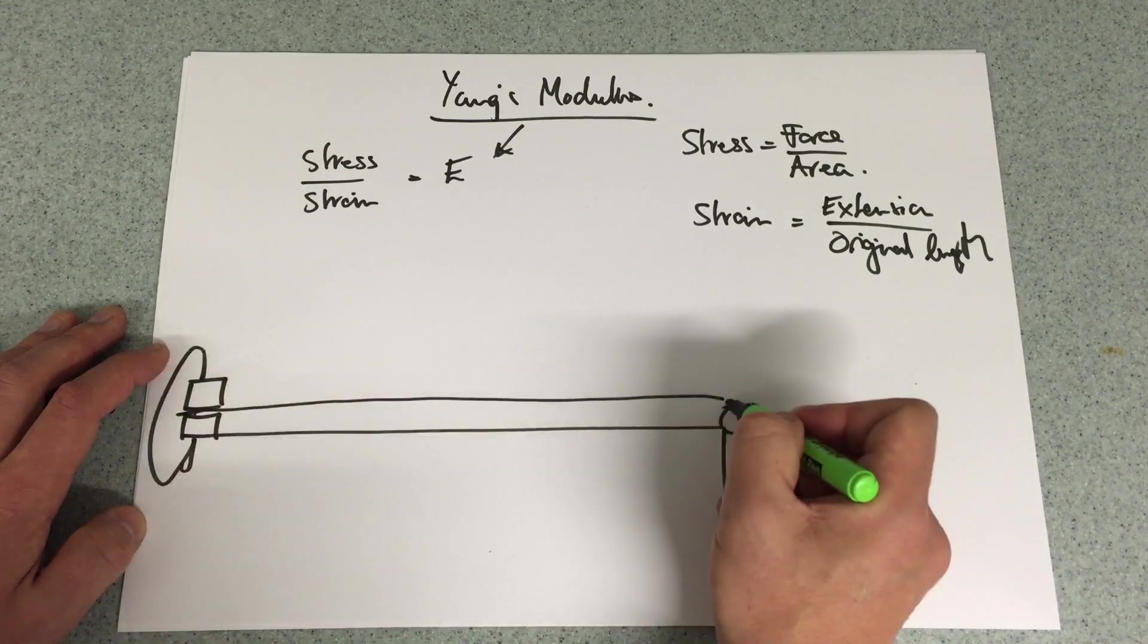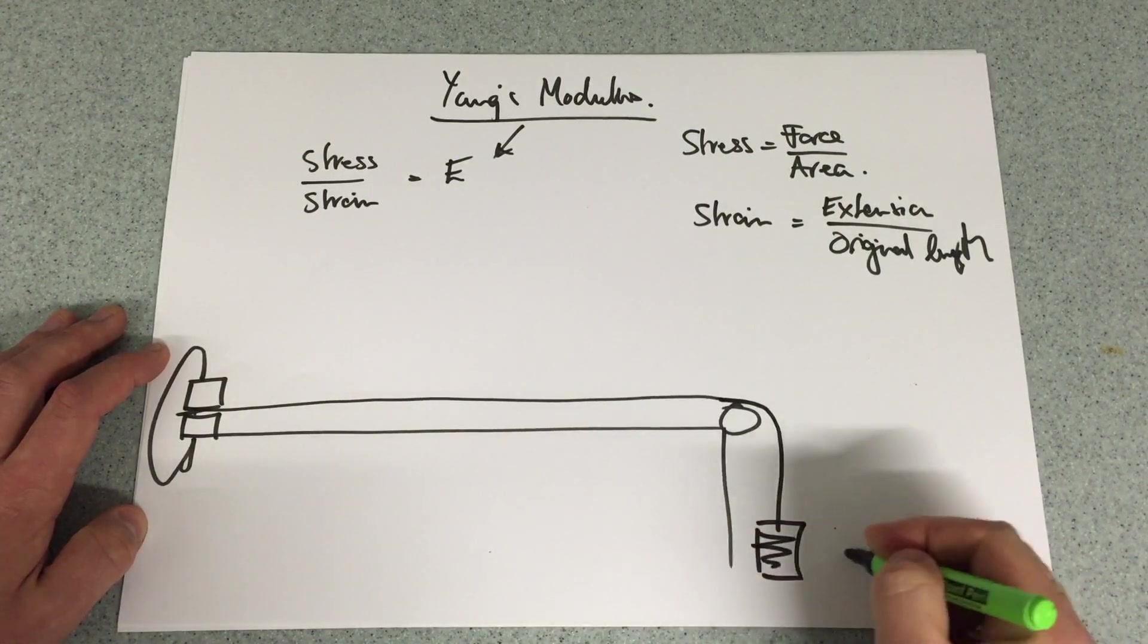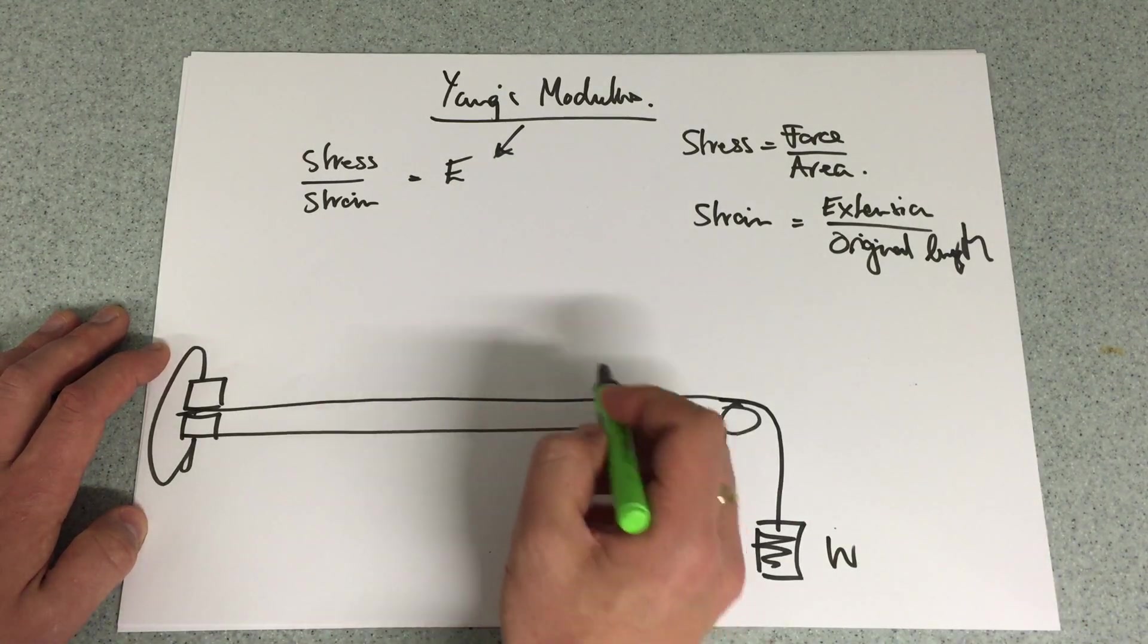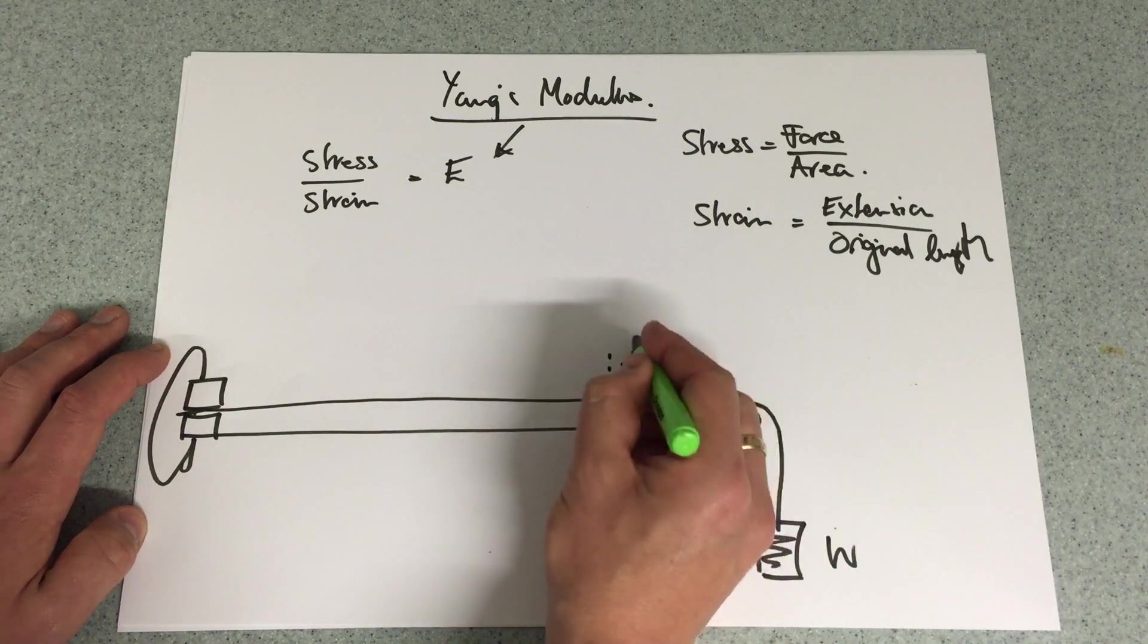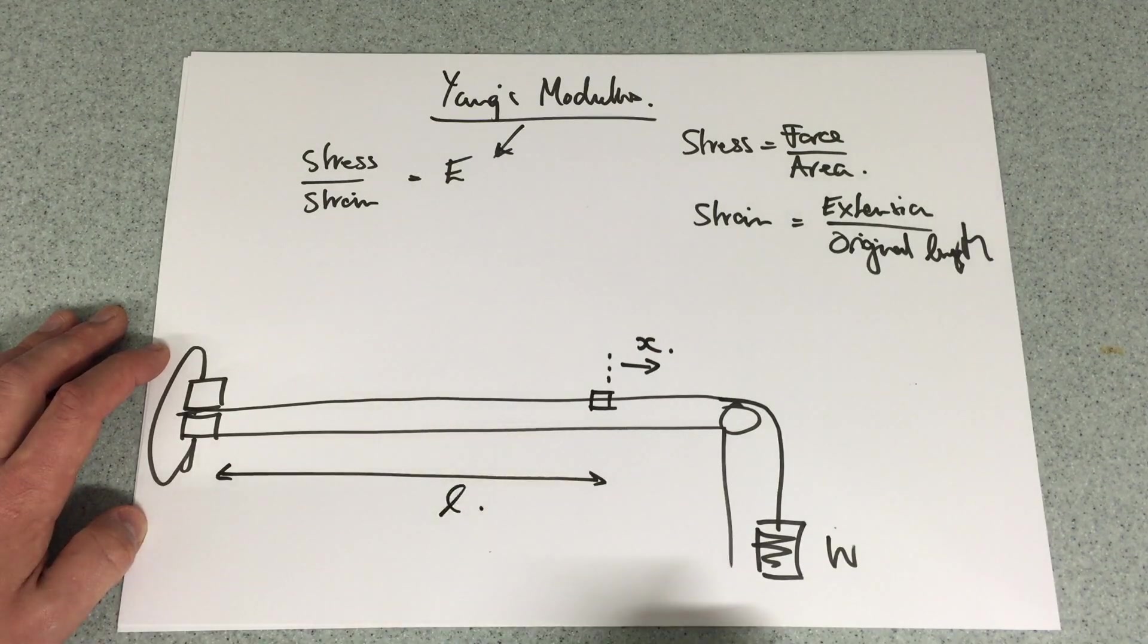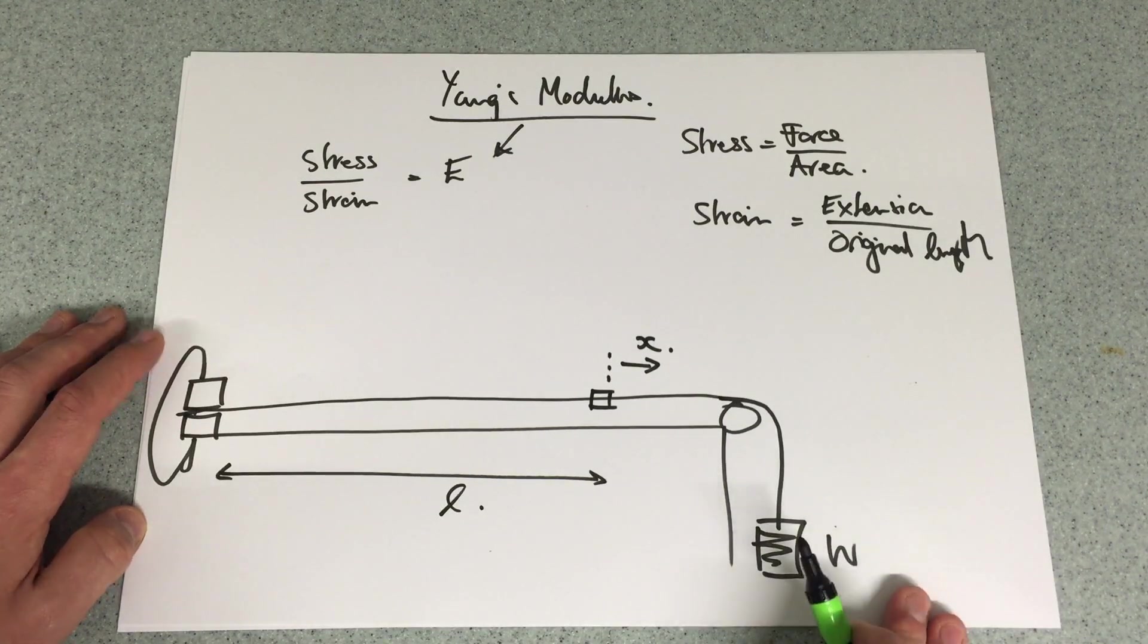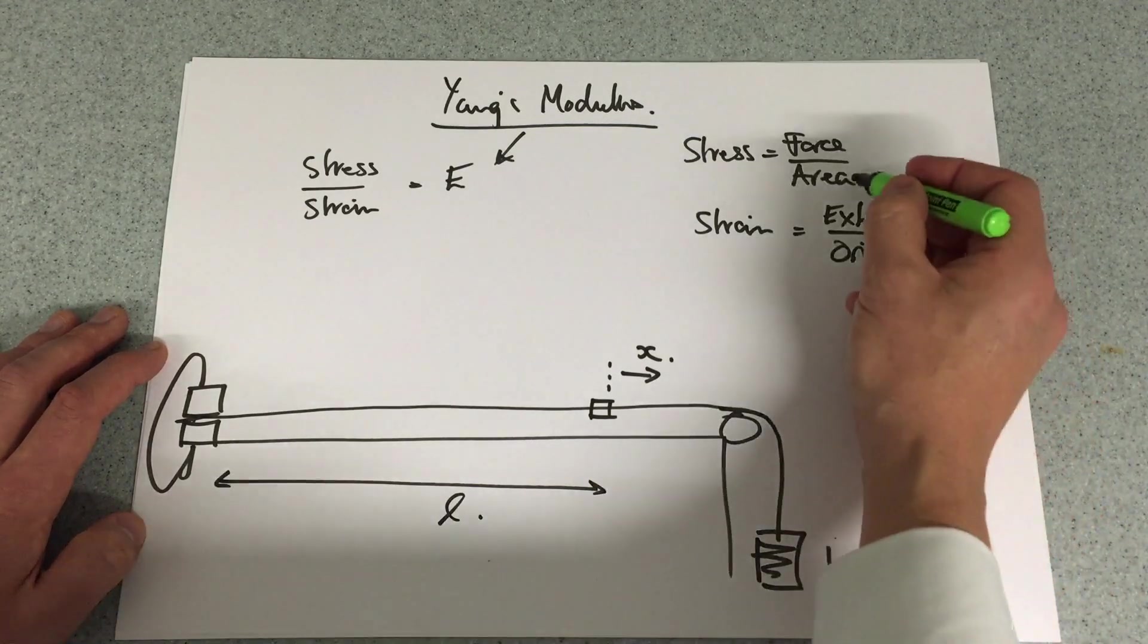So with that securely fastened there, I'm then going to place some weights on the other end. Of course, I'm going to need a reference point and I'm going to look for the extension that happens compared to the original length with known weights on it. So in order for that to happen, we've got quite a lot of things we need to work out. First of all the area bit.